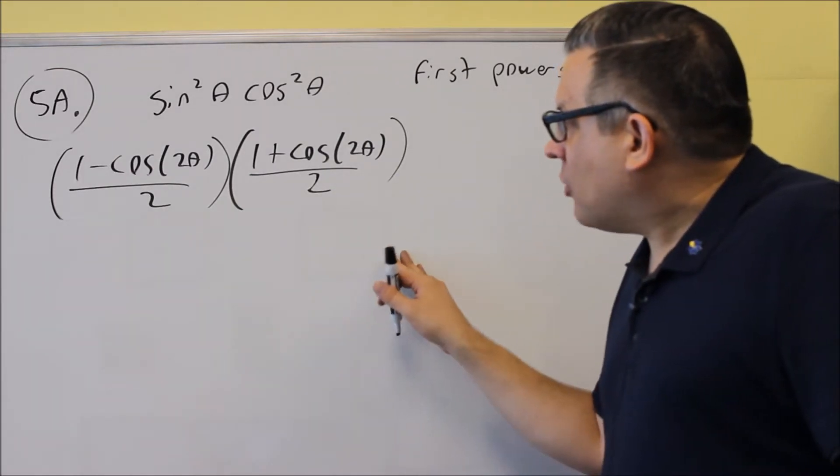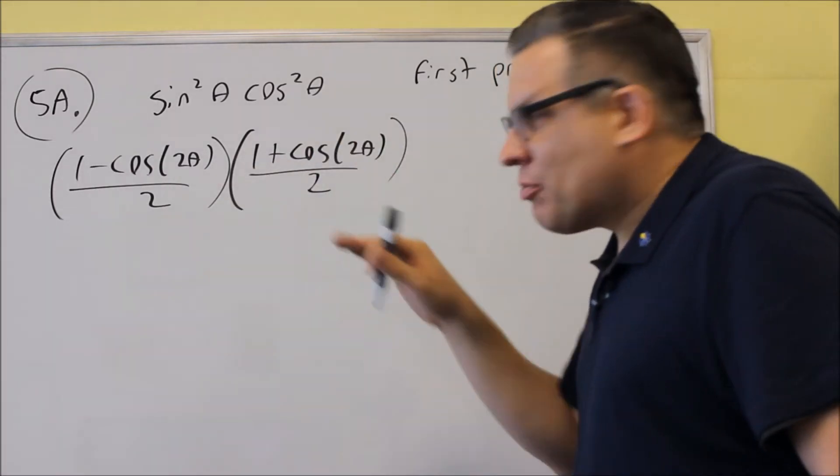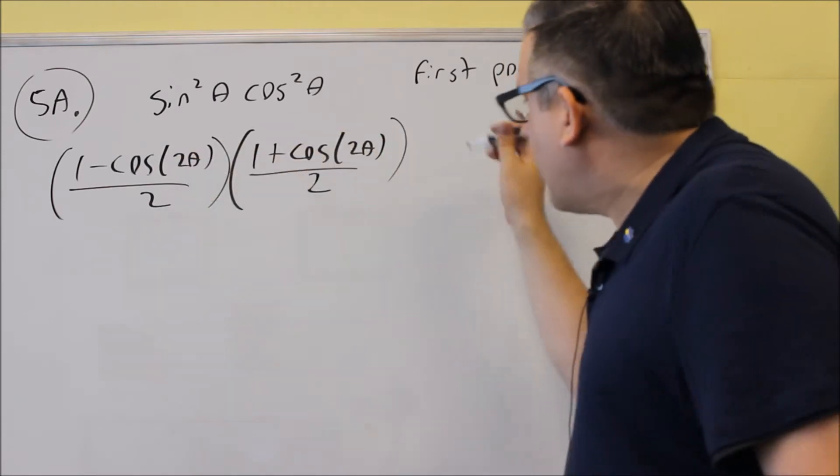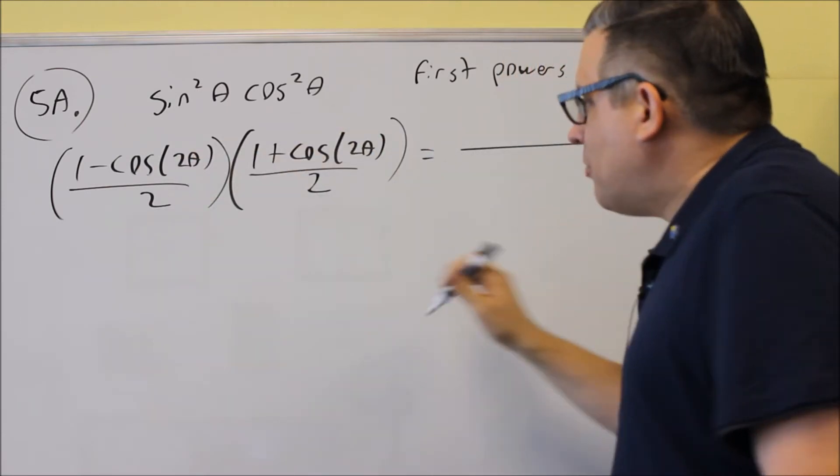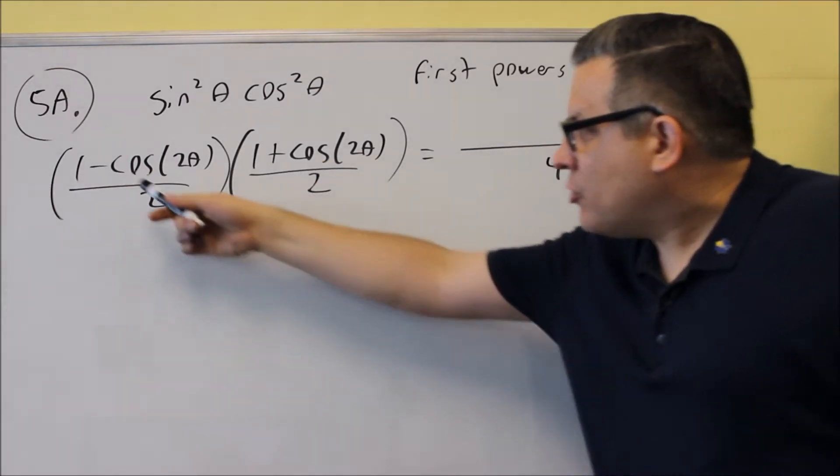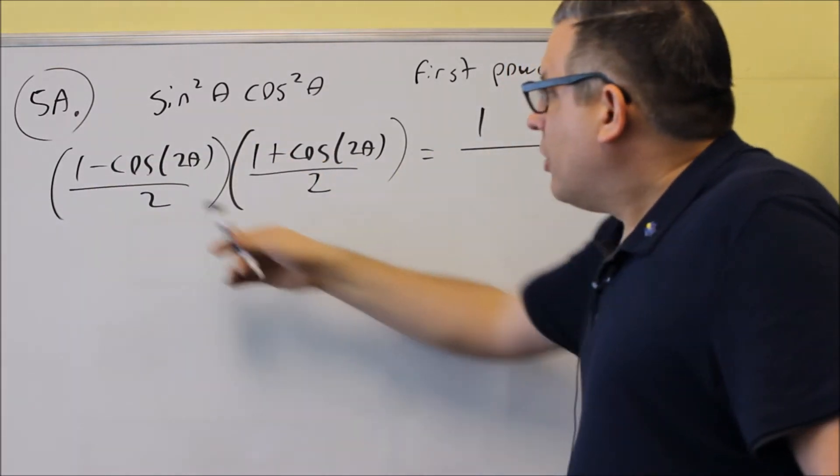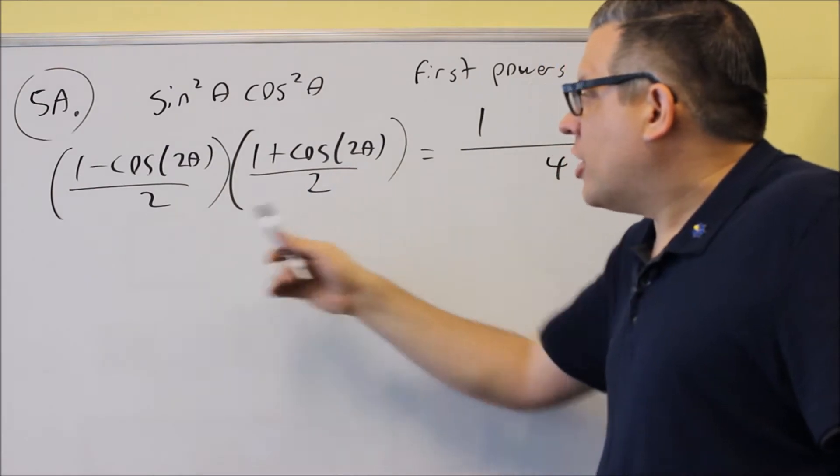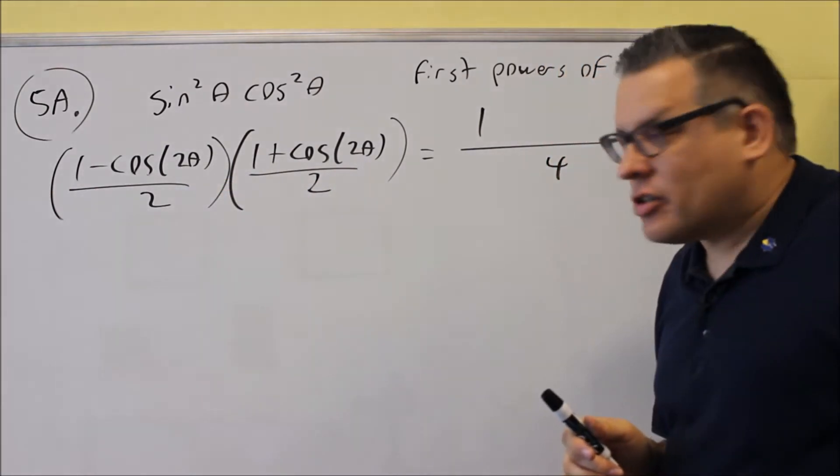Now that I'm done with that, I'm going to just simplify this by multiplying it across the top, across the bottom. So if you multiply across the bottom we just get a 4. Now if you multiply across the top, you get a 1, you get plus cosine 2 theta minus cosine 2 theta, that's going to cancel out.